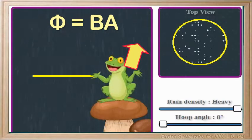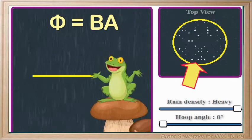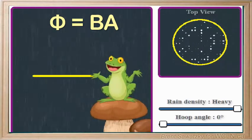Recognize that we're measuring the amount of flux or rain that's passing through our loop. The bigger the area, the bigger the flux. So far, so good?